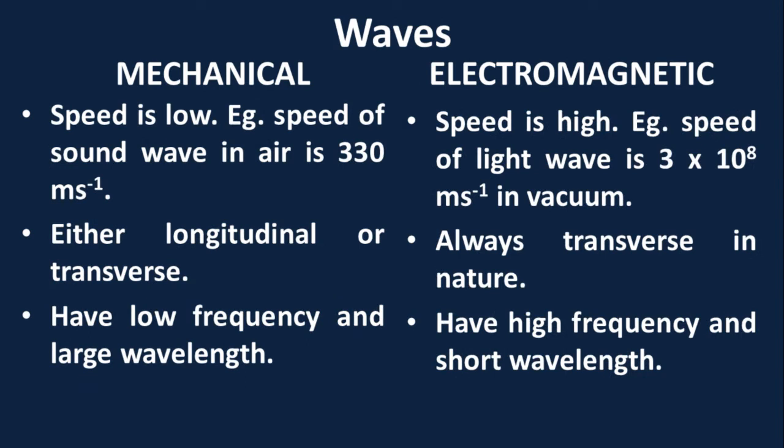The speed of mechanical waves is low. For example, the speed of a sound wave in air is 330 meters per second. That of electromagnetic waves is very high. For example, the speed of light is 3 × 10⁸ meters per second in vacuum. While mechanical waves could be longitudinal or transverse, electromagnetic waves are always transverse in nature.